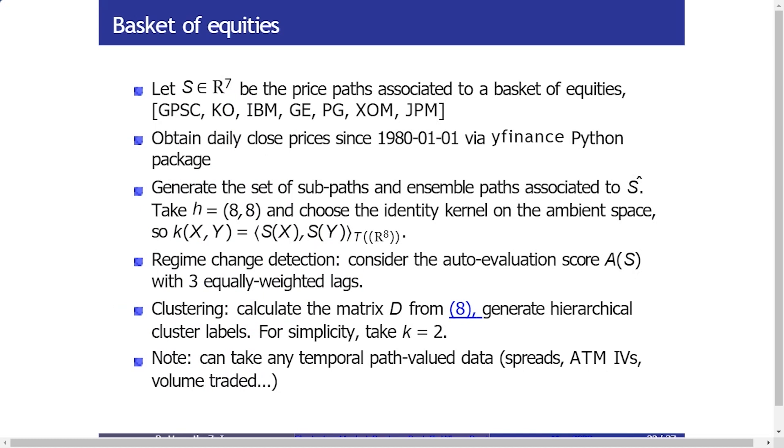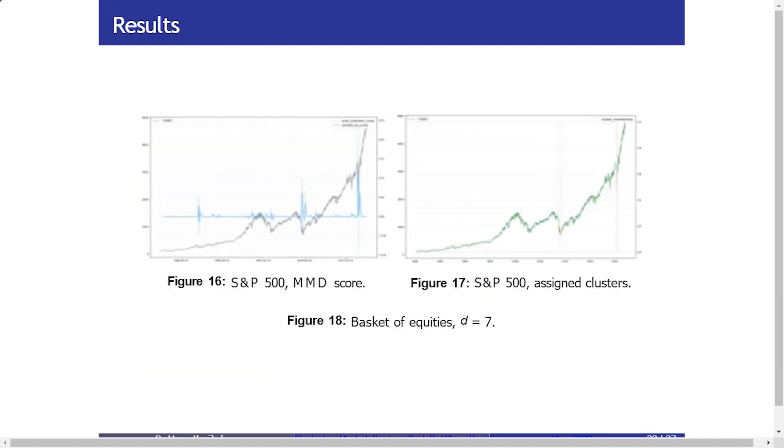So the last one I want to quickly go through in the last five minutes is using this on real data, because all these toy examples are useful but we want to see if this works in practice. So what we do is we have obtained daily close prices since the 1980s via Yahoo Finance with a selection of equities. And we are going to generate the set of ensemble paths as we mentioned previously. And then we are going to use this auto-evaluated score, which is this score evaluating the ensembles against each other in the past. And we're going to look to see when this spikes, and to see if this is in some sense lining up with our idea of regimes in this setting.